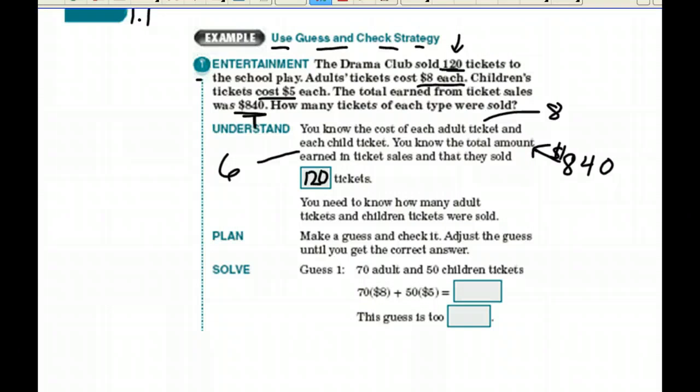What do you need to know is how many of each type. How many adult tickets and how many children tickets. We're going to make a guess and check it. We're going to adjust it until we get our answer right.